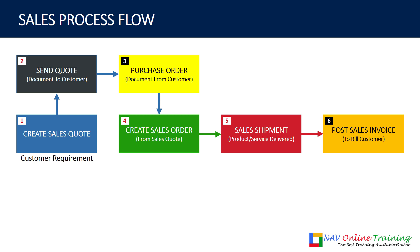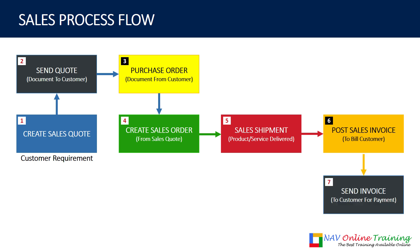Now you have sent the product and services, so once you have delivered your product or services, they need to pay you. They pay against a sales invoice. So you post a sales invoice to bill the customer and then you send that sales invoice to the customer for payment — either as a hard copy printout or as a soft copy, mentioning the amount they need to pay. The invoice is in a relationship with the sales order.